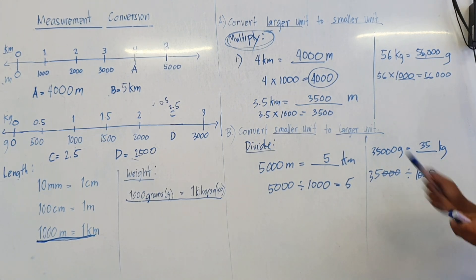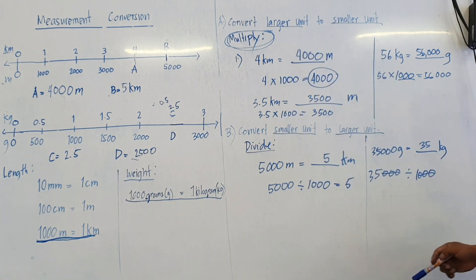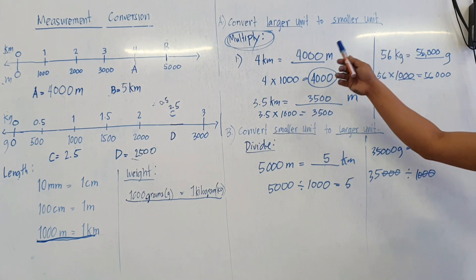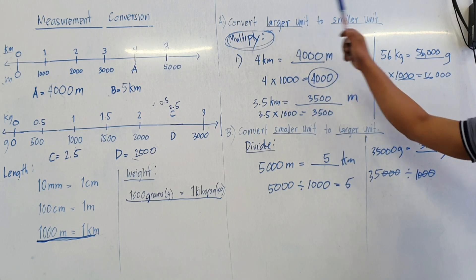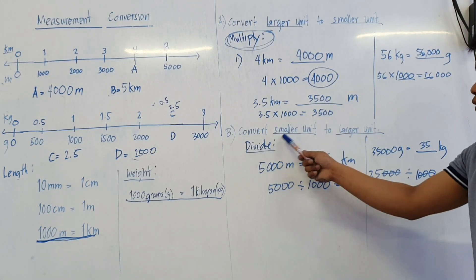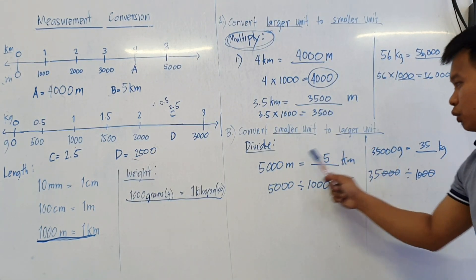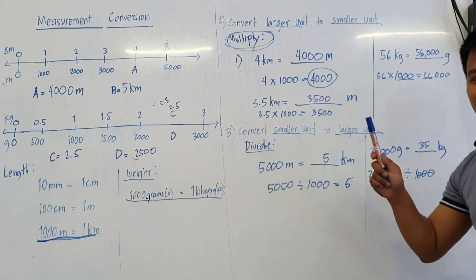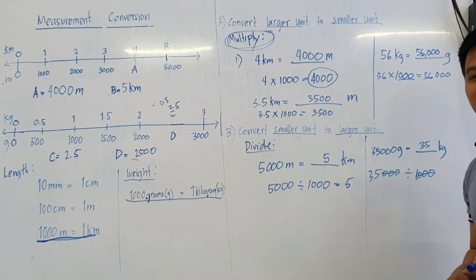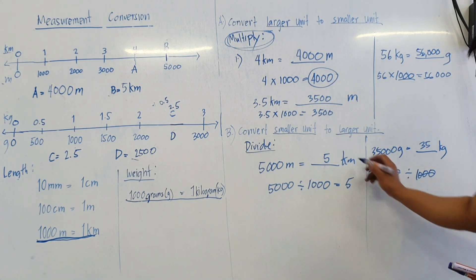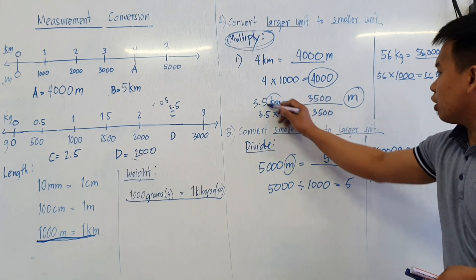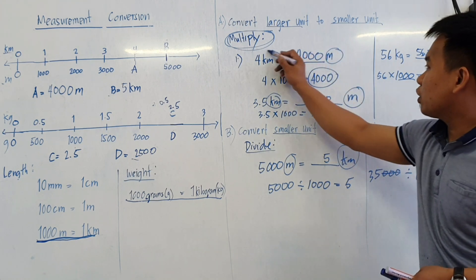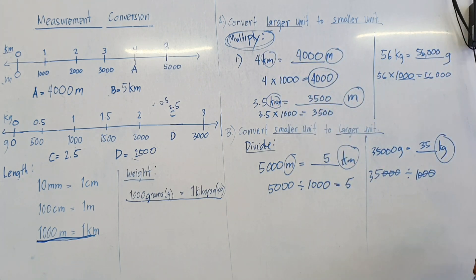That's how we convert the units — from smaller units to bigger units, and from larger units to smaller units. As a recap: larger units to smaller units, we need to multiply. Smaller units to larger units, we need to divide. And if you have the answer, don't forget to write the unit. The unit is very important.